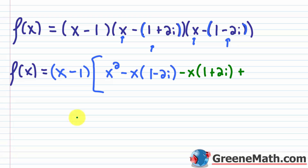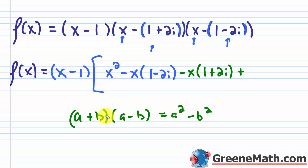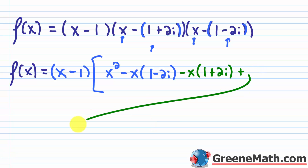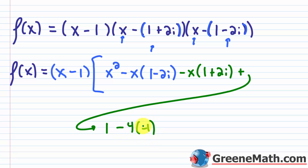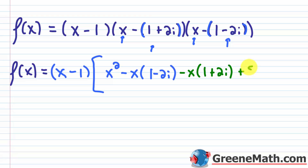So for (1 plus 2i)(1 minus 2i): the first term squared is 1 squared equals 1, minus the second term squared: (2i) squared is 4i squared. Since i squared is negative 1, that's 4 times negative 1 equals negative 4. So 1 minus negative 4 gives 1 plus 4 equals 5. I can write this as 5.